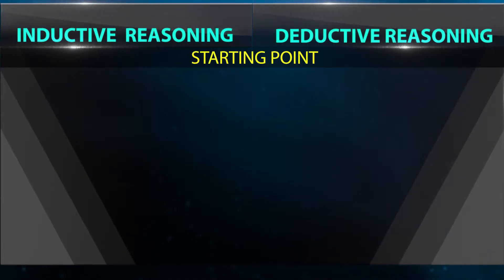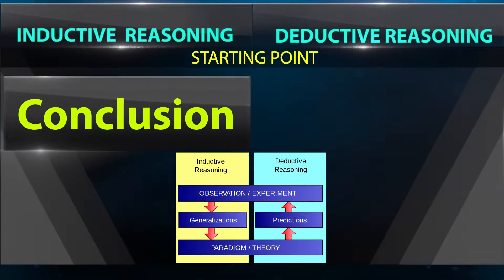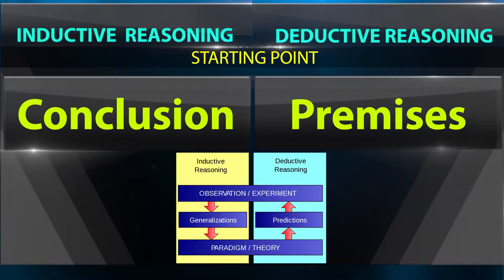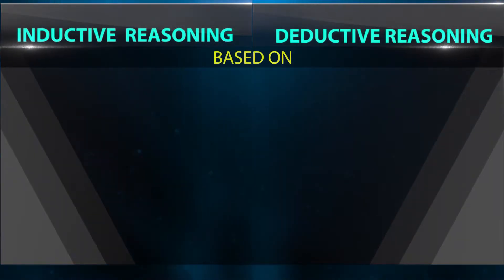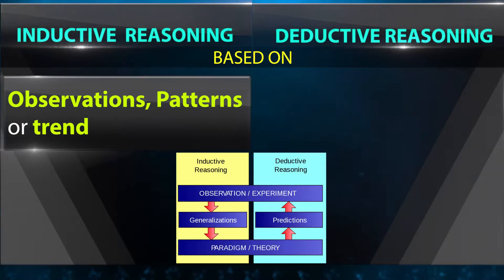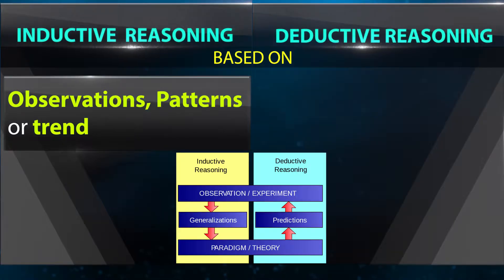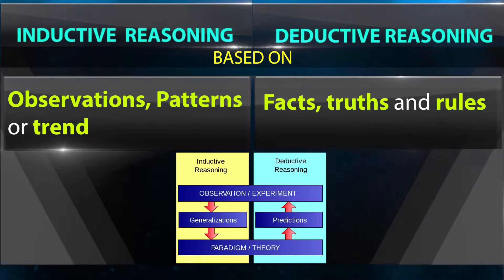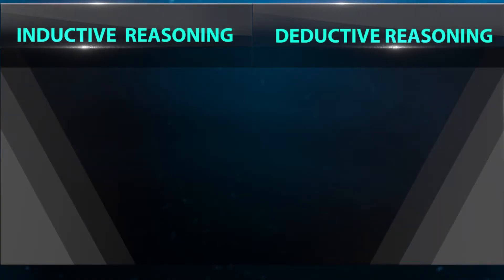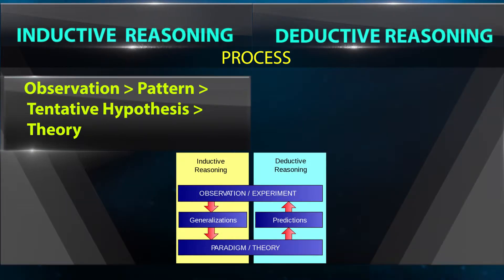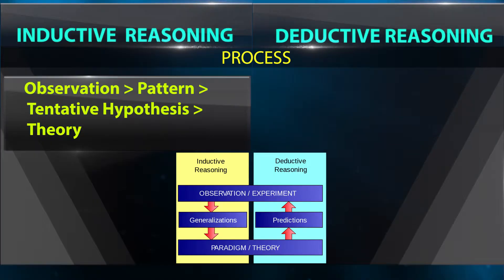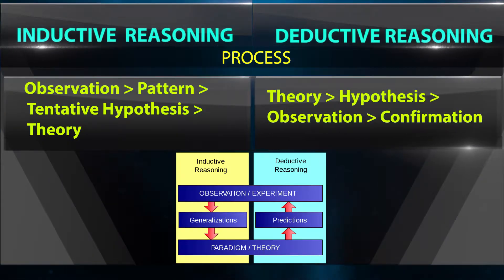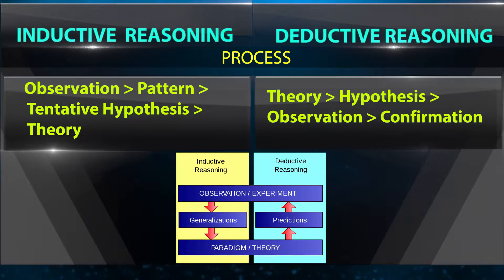In terms of starting point and basis: inductive reasoning uses a conclusion as its starting point, while deductive reasoning uses premises. Inductive reasoning is based on observation, patterns, or trends, whereas deductive reasoning is based on facts, truths, and rules. The process of inductive reasoning flows from observation to pattern to tentative hypothesis to theory, whereas deductive reasoning starts with a theory.